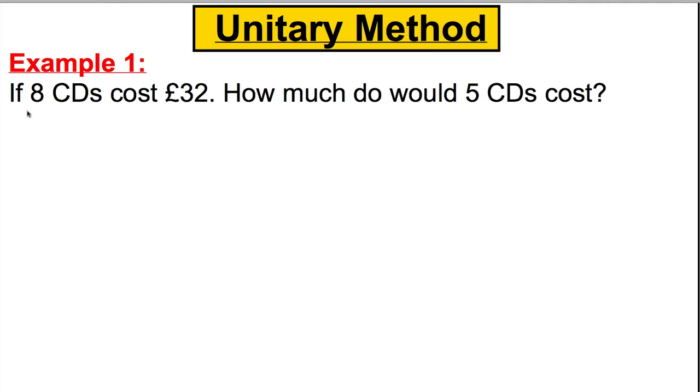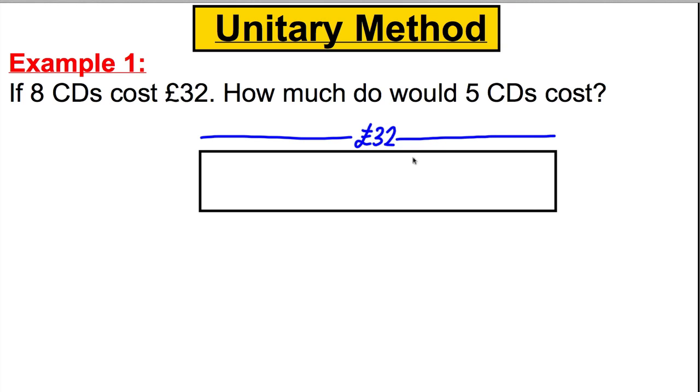First one, 8 CDs cost £32, how much would 5 CDs cost? So we are going to use our picture method. Let's draw a rectangle and that's going to represent 8 CDs which cost £32 in total. So let's split it up into 8: 1, 2, 3, 4, 5, 6, 7, 8. Now what must go in each box? What must each CD be worth?